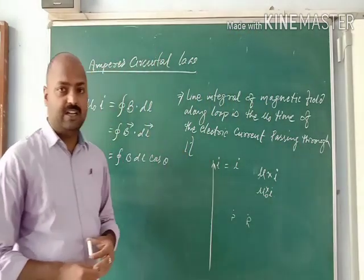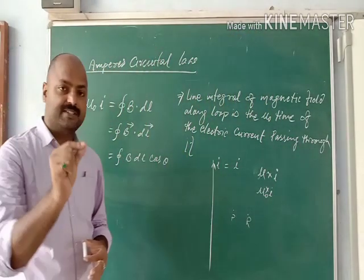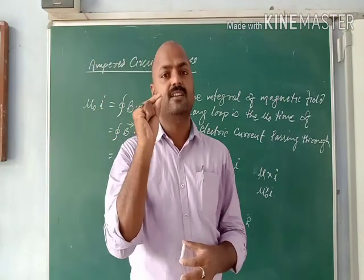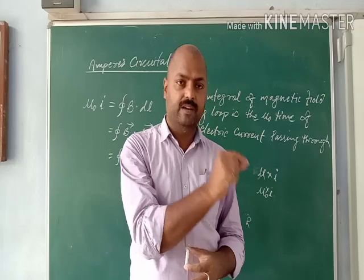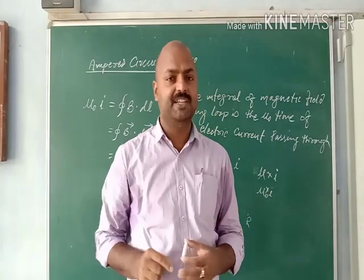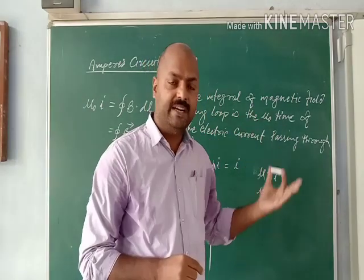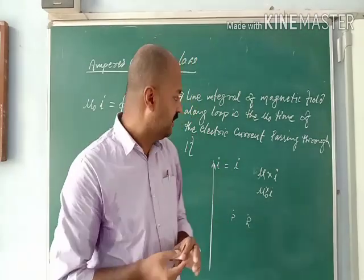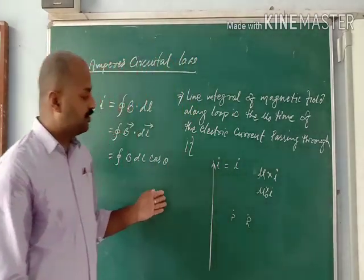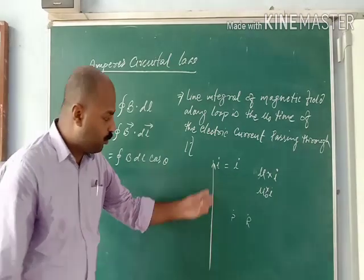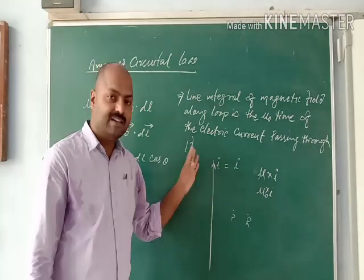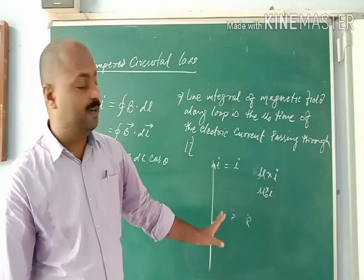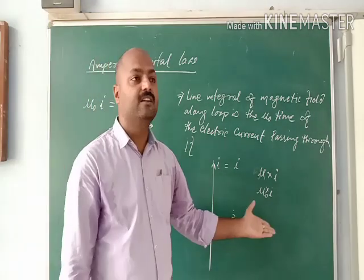In Biot-Savart's Law, the basis taken is the current element — a very small distance through which electricity passes — and we find out what amount of magnetic field is produced by it. Here we also discuss: if this is a wire carrying current, what is the amount of magnetic field produced by it at different points?